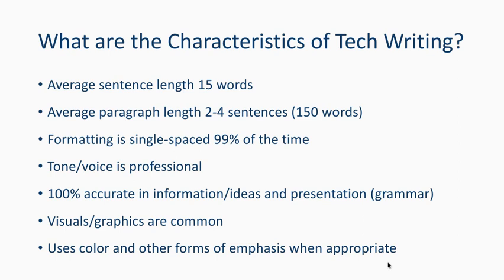There are some common characteristics — rules of thumb and averages, not absolute requirements. The average sentence length is about 15 words, compared to academic writing's average of 25 words — almost twice the length. The average paragraph length is two to four sentences, or about 150 words, though one-sentence paragraphs are allowed when needed.